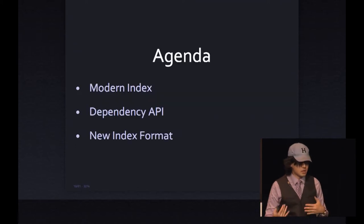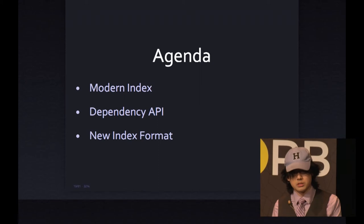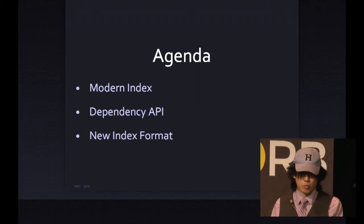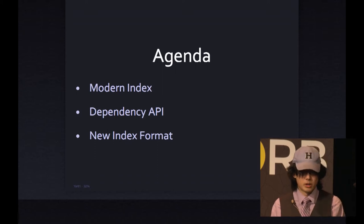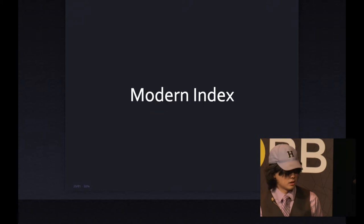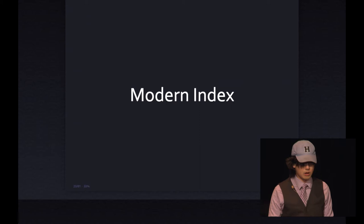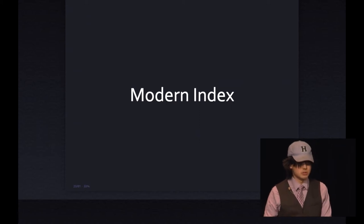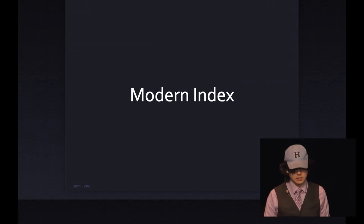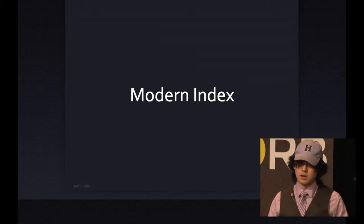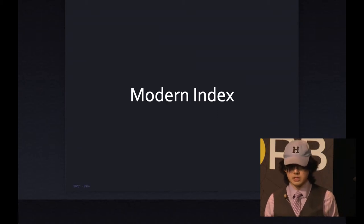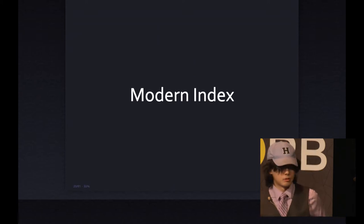My talk is about walking through the various ways we've been able to get that dependency information and how we've looked at and tried to make it better. The first one is the modern index — this is what is actually used when you run 'gem install'. In the Bundler 1.0 days, or if you use the full source index in Bundler 1.1+, it downloads and uses this to construct the dependency graph.